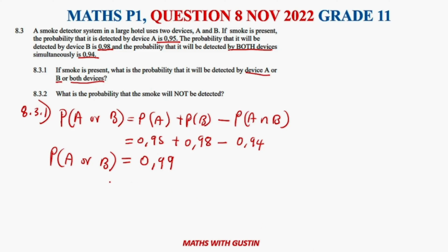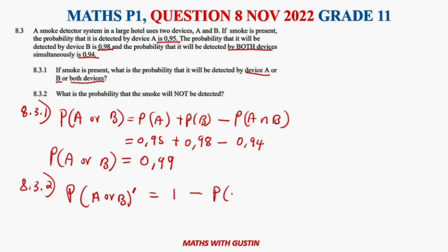Question 8.3.2 asks: what is the probability that the smoke will not be detected? Since we know the probability of detection is 0.99, this is a complementary event. So the probability of not detecting the smoke is 1 minus 0.99, which gives us 0.01. This means these devices are very good — there is only a 1% chance of not detecting smoke.